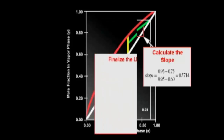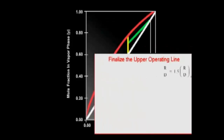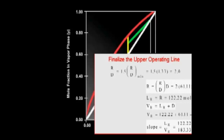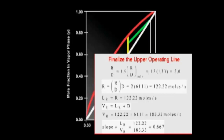We will assume the operating reflux ratio is 1.5 times the minimum reflux ratio. The operating reflux ratio is equal to 2. From the operating reflux ratio, we can calculate the slope of the upper operating line by doing the mass balance across the condenser to determine both the liquid and vapor flow rates in the rectifying section. The slope is equal to 2 thirds. We can now draw the upper operating line, starting at the point on the 45-degree line that corresponds to the distillate mole fraction and drawing a line towards the Q line with a slope of 2 thirds.